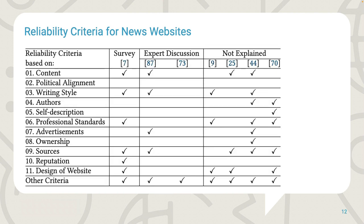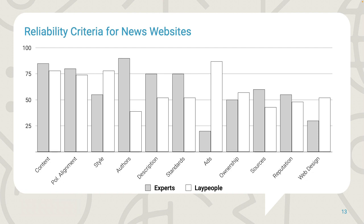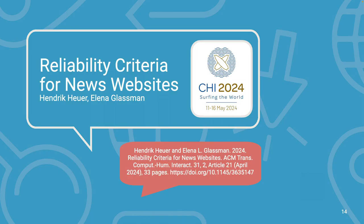The table shows that some of the criteria we identified in practice are frequently covered in prior work, while others are rarely included. Frequently included criteria are content, writing style, professional standards, sources, and website design. Criteria covered by only one or two other lists include authors, self-description, advertisements, ownership, and reputation. We are the first to describe political alignment, which is surprising since it is one of the most frequently used criteria in our investigation. The largest overlap is with the NewsGuard criteria, covering seven of the 11 criteria we identified. Our empirical studies showed that writing style and website design are more frequently used by end users than by experts. You can find more information in our paper titled Reliability Criteria for News Websites. Thank you for your attention.